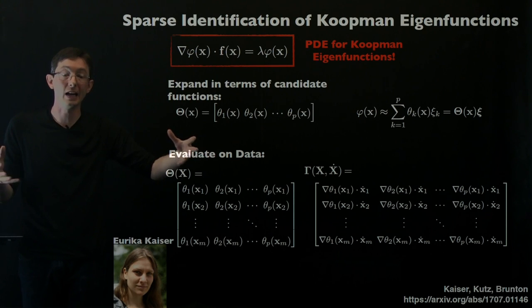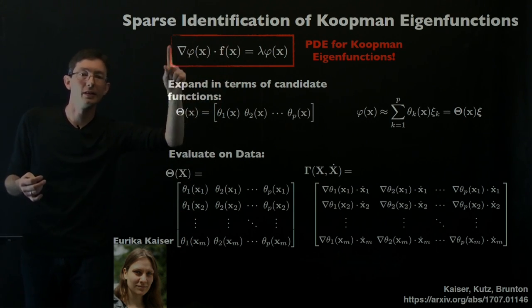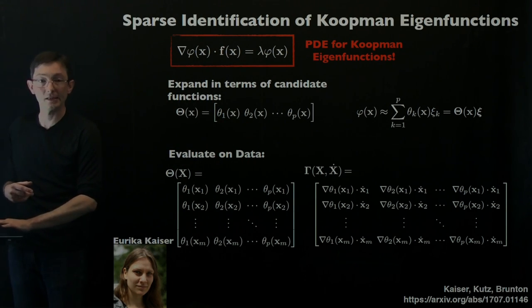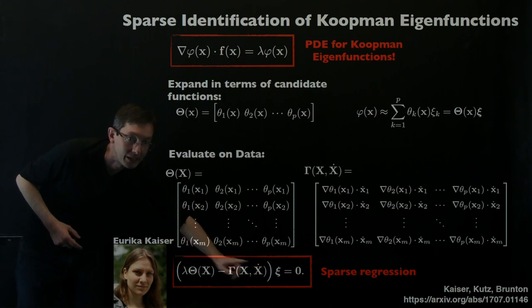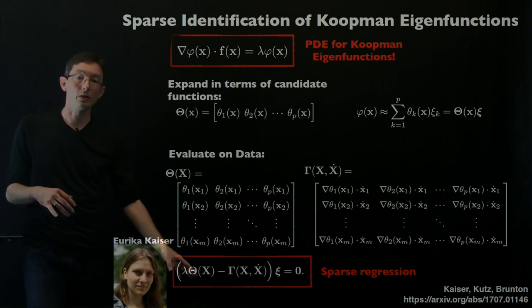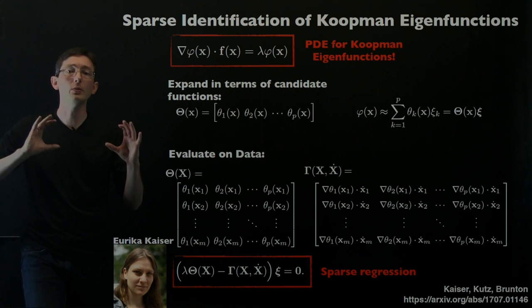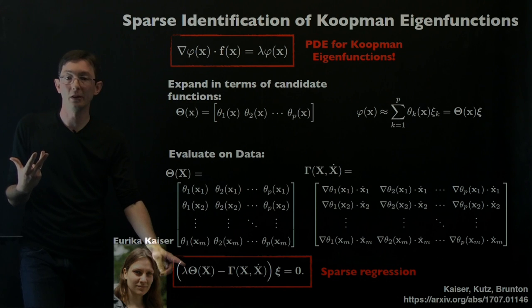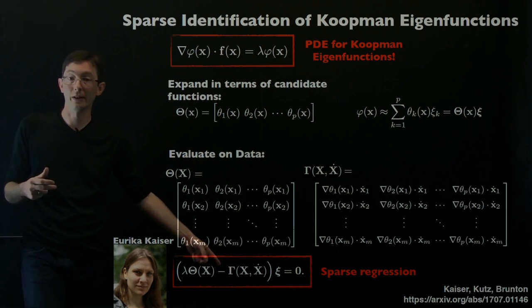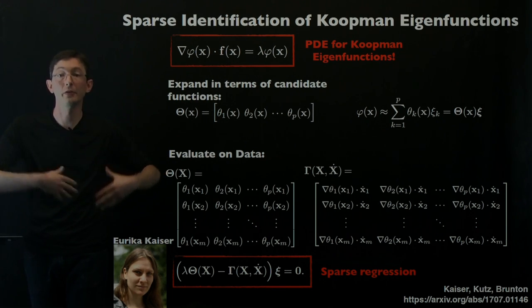If you have trajectories of data, you can evaluate this on trajectories of data like this. X at time one, X at time two, and so on. You can also evaluate this chain rule derivative term, I call this gamma x x dot. You can evaluate this on data as well. Once you have those two matrices, you can essentially solve for the sparsest vector xi in the null space of this operator. That will be a good approximation for the coefficients of these Koopman eigenfunctions. Now it turns out this is hard to do, and you have to kind of know lambda ahead of time. But what we found time and time again is that if you have eigenfunctions that are lightly damped, meaning that the real part of this is small, nearly zero, these lightly damped eigenfunctions persist in the data for a long time, those are the easiest to pull out with this regression. Fortunately, those are the ones that actually matter the most for prediction, estimation, and control, because these lightly damped systems are the ones that are going to stick around the longest.